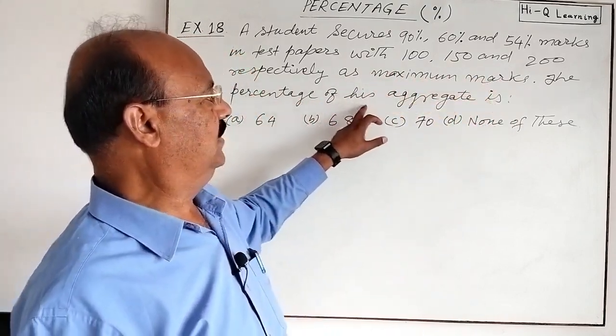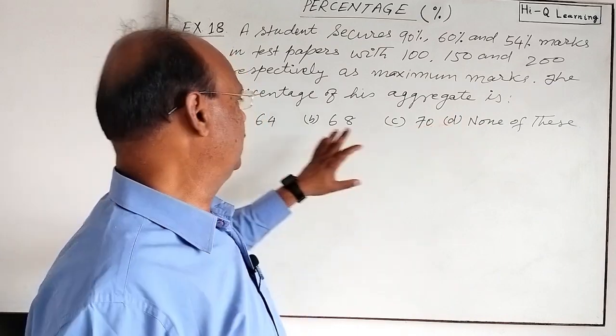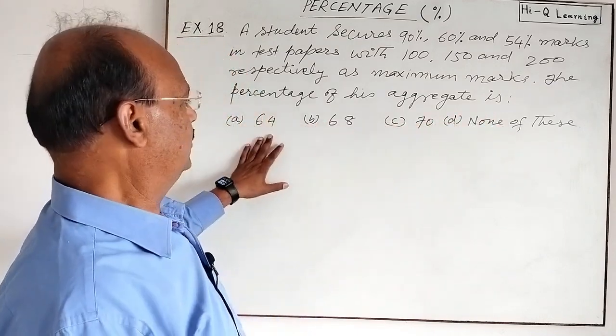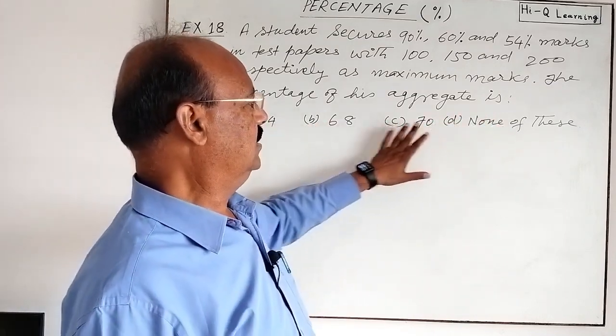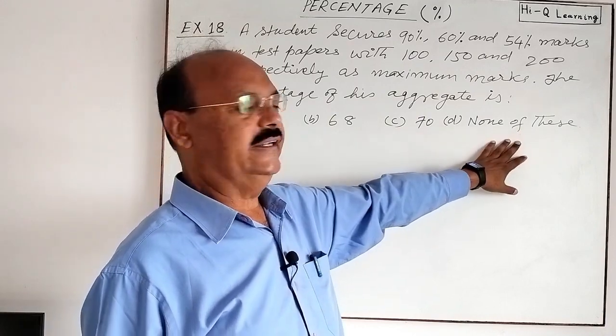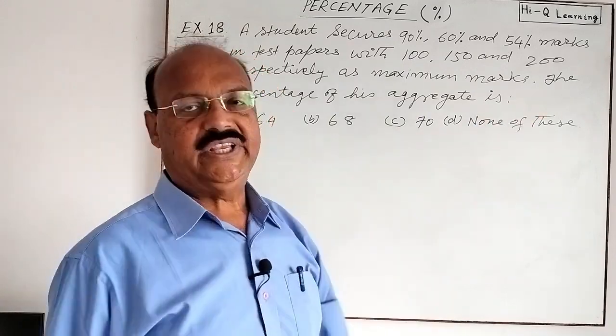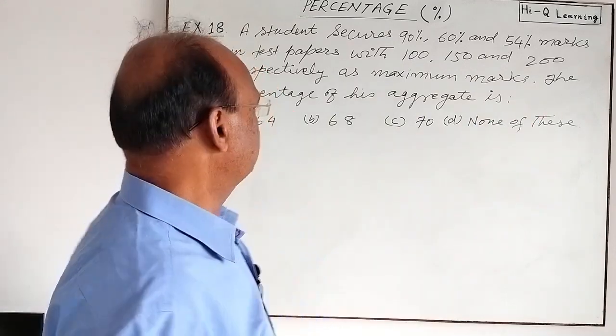The percentage of his aggregate is how much? Four options are given here: 64, 68, 70, and none of these. So we have to choose the correct option. Let us see the solution.